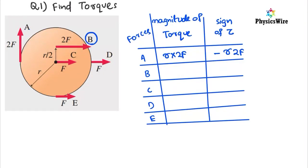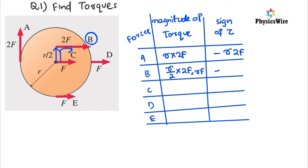Coming to force B, you can see the perpendicular distance. Draw a straight line perpendicular to the force — the perpendicular distance is r/2. So your torque is r/2 times 2F, which equals r times F. The direction is moving towards the right side, which is a clockwise rotation, so it is again negative.